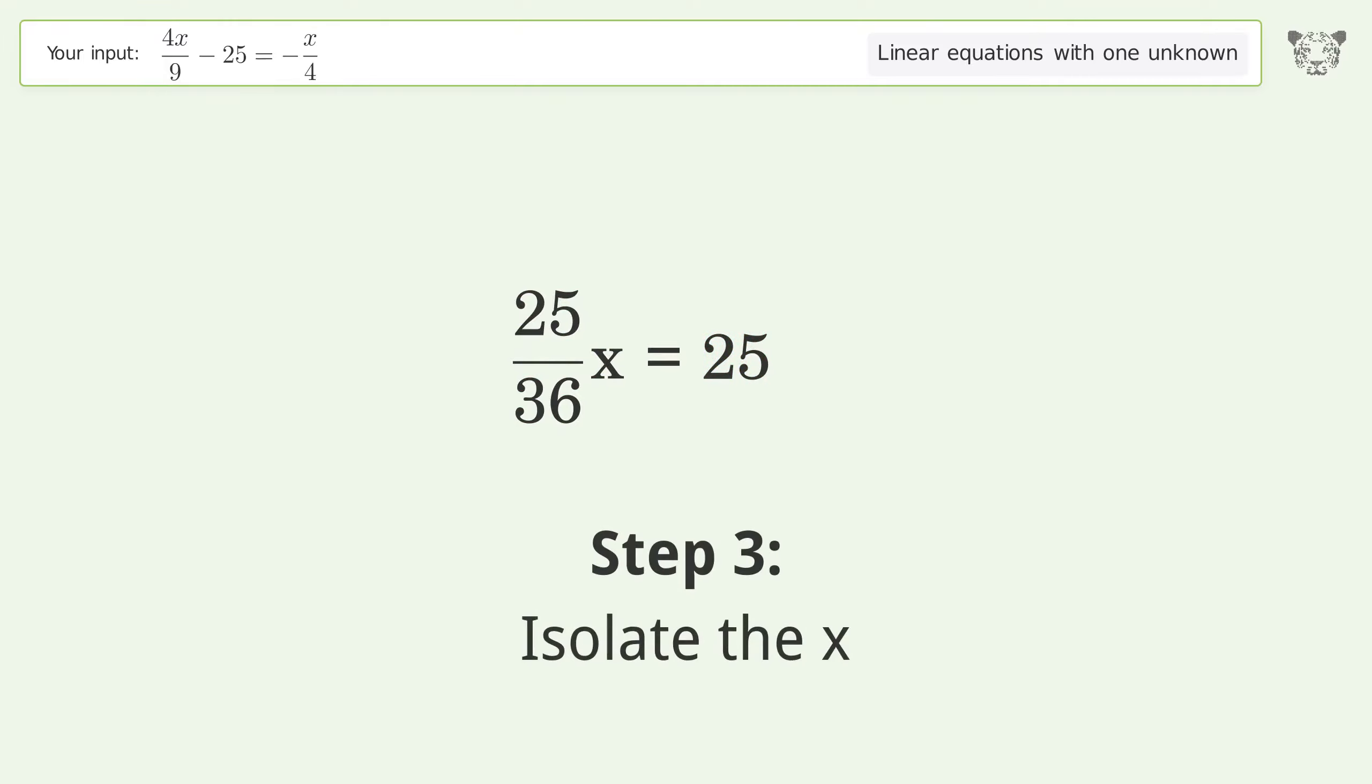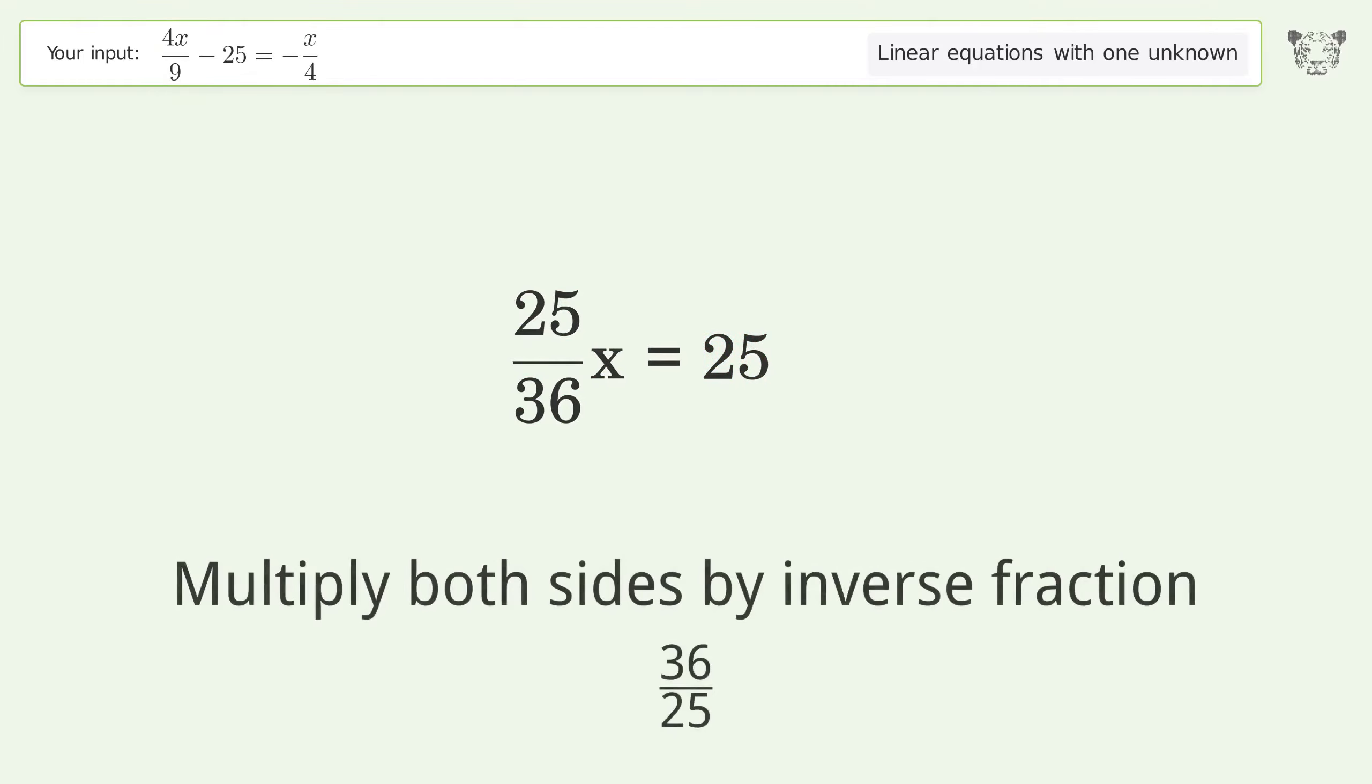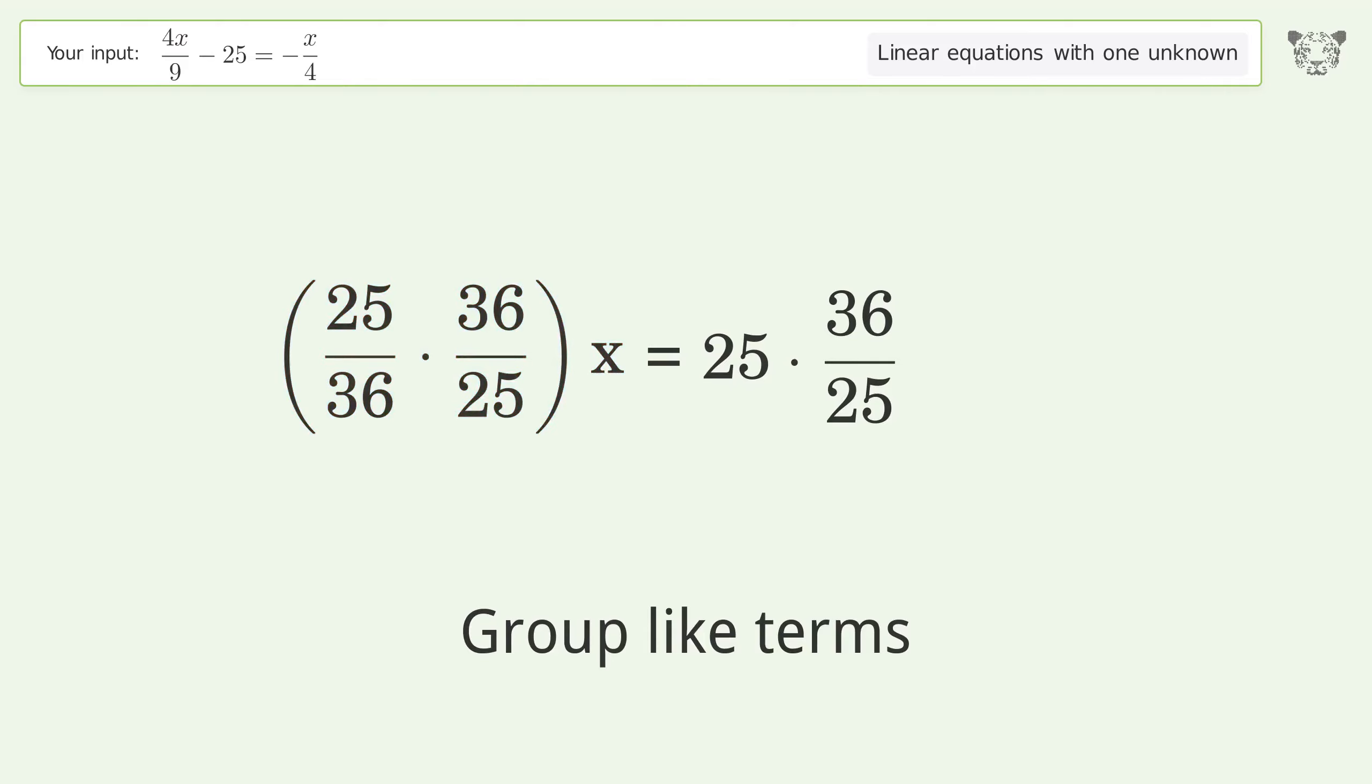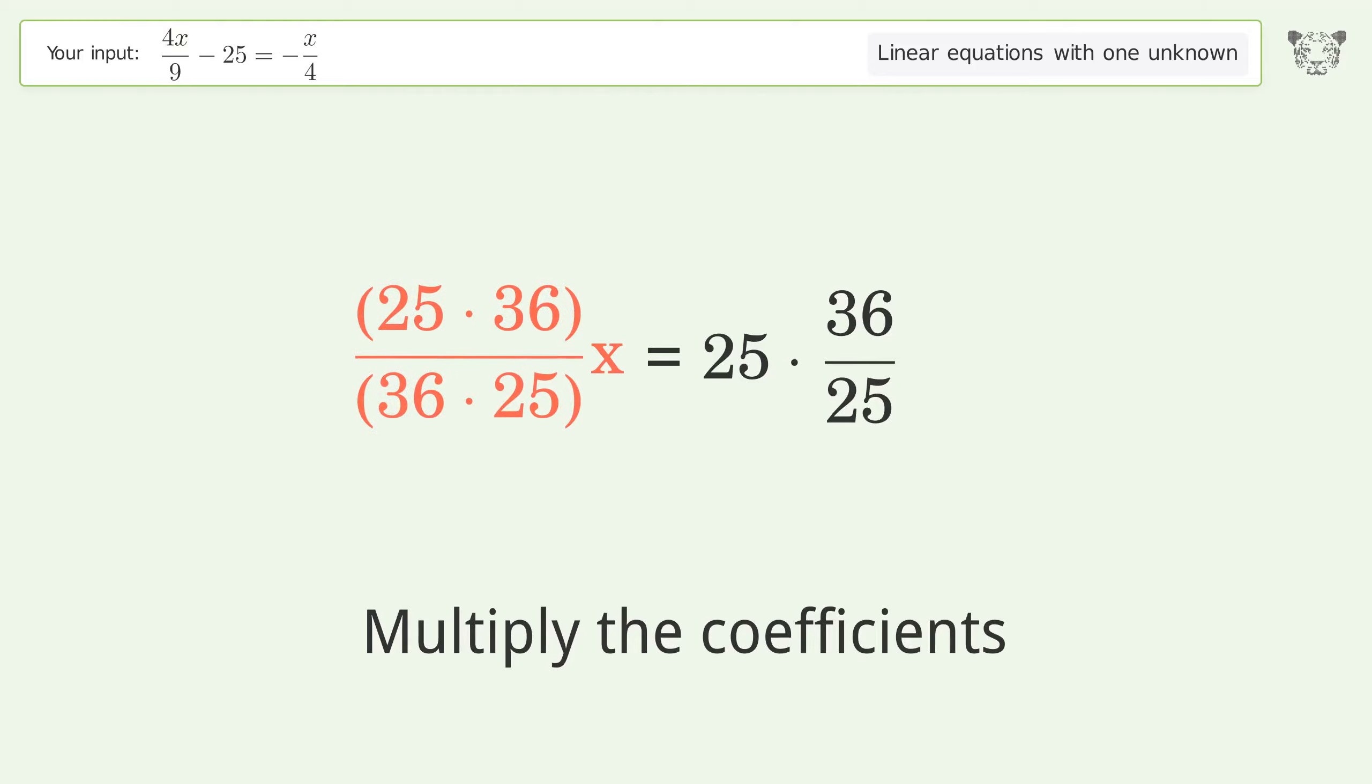Isolate the x. Multiply both sides by inverse fraction 36 over 25. Group like terms. Multiply the coefficients. Simplify the fraction.